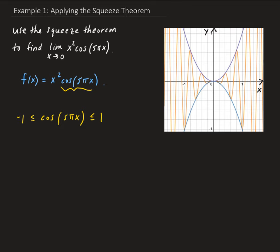What we can do here is bound x squared times cosine of 5 pi x. We can multiply through by x squared, and we're going to get minus x squared, less than or equal to x squared times cosine of 5 pi x, less than or equal to x squared. So there's our bound — we have a lower bound and an upper bound, and we've bounded our given function.